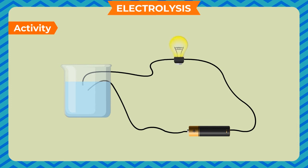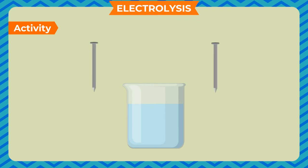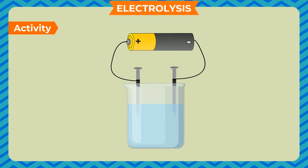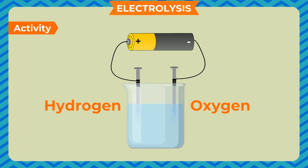If the bulb glows, the liquid conducts electricity; else it does not. The ends of the wire should be washed and dried before being used again. To demonstrate the chemical effect of electric current on water, take two iron nails, wrap copper wire around them, and connect the other ends to the two terminals of an electric battery. Take water in a beaker and add a little salt or a few drops of sulfuric acid to make it conducting. Immerse the nails in the solution. You will find small bubbles of gases — hydrogen and oxygen — coming out from the water near the nails, because electric current breaks water into its constituent gases. This shows that electric current has a chemical effect on water.